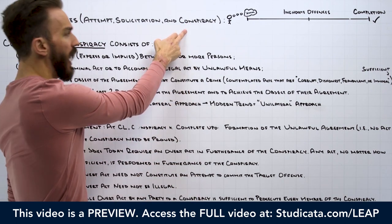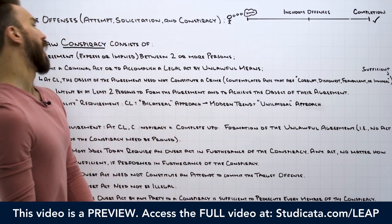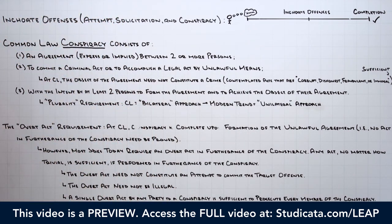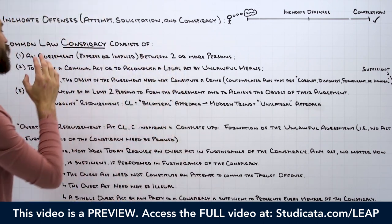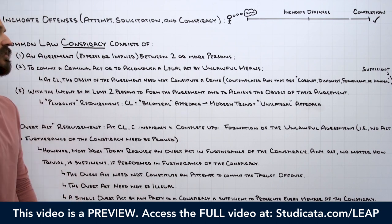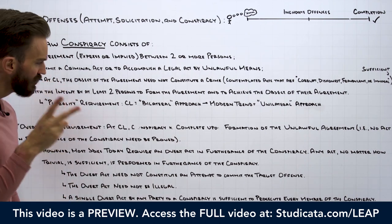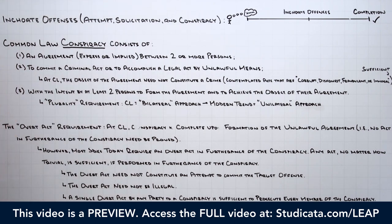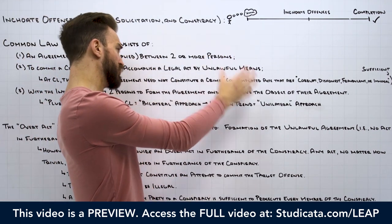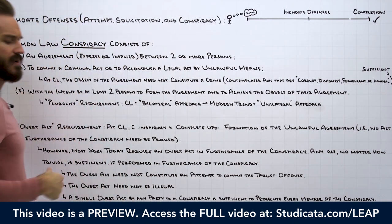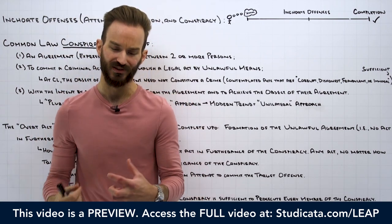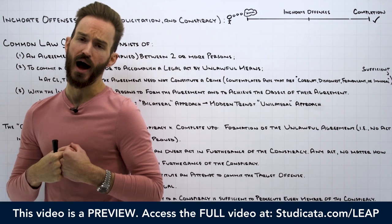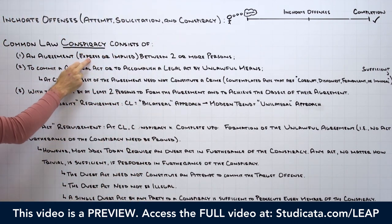Let's jump into the common law elements. At common law, conspiracy consists of an agreement — expressed or implied — between two or more persons to commit a criminal act, or to accomplish a legal act by unlawful means, with the intent by at least two persons to form the agreement and to achieve its object. First element: we need an agreement. It can be expressed or implied between two or more persons. An agreement is essentially a meeting of the minds — think back to contract law, it's like mutual assent.